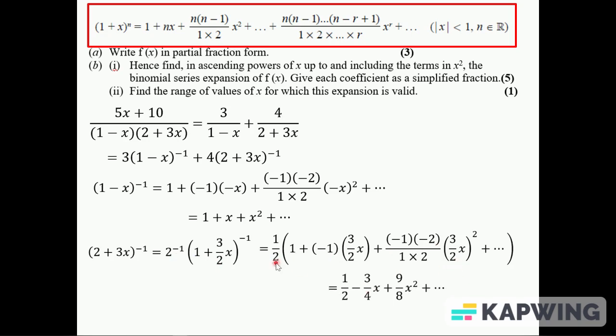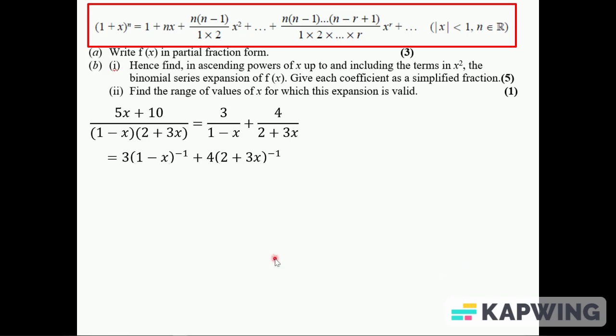The whole thing then simplifies down to this: 1/2 here, this will be minus three-quarters x, the ones and the twos cancel so that's just 9/4 x squared. And multiplied by 1/2.